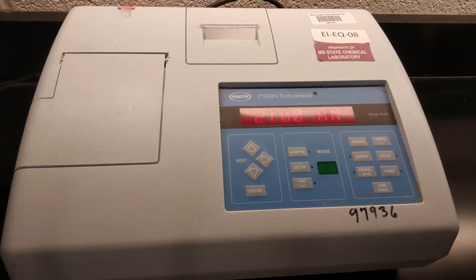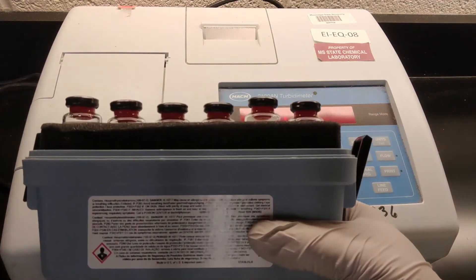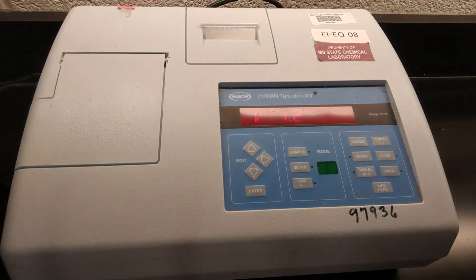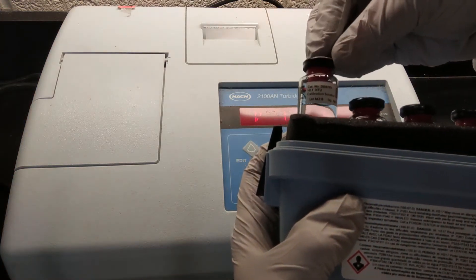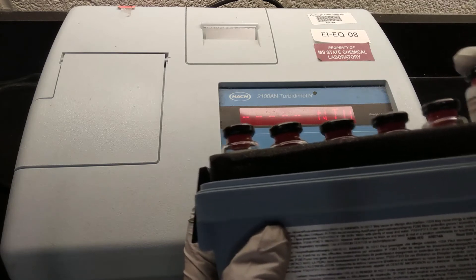So while we're waiting for that, we can go into what we're going to do once it does start up. A lot like basically every other analysis we do in this lab, we can't just put a sample into it and measure our turbidity. We're first going to have to do our calibration. And so that's where these guys come in. We're going to have to do our six point calibration starting with our lowest, our less than 0.1 NTU solution and ending at our highest, 7500.